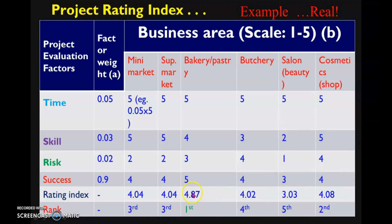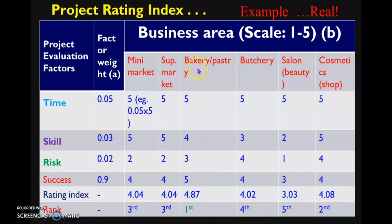When you rank these, the largest number is 4.87, so bakery or pastry ranks first. Second is cosmetics at 4.08. Third is mini market and supermarket, both at 4.04 — you can choose either equally. Therefore, by considering that you have no capital problem, you can choose bakery or pastry as your business. This is just an example.